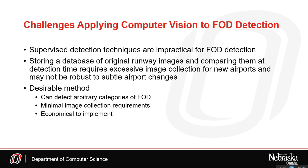There are some challenges with using computer vision for FOD detection that are addressed in this work. First, supervised detection methods are impractical for FOD detection because they can only detect predefined classes due to their dependence on a dataset with predefined classes and samples, while FOD is a broad data type. Another idea visited in previous works is to store a database of original runway and taxiway images and use direct image processing techniques to see if the images have changed. This requires excessive image collection that is specific to airports and may not be robust to subtle changes in airport environments. A method that can detect previously unseen categories of objects and is robust to subtle changes in airport environments is more desirable and practical for FOD detection. Based on a review of related FOD detection works and on the practical needs of airport operators, a FOD detection method that can detect arbitrary categories of FOD, requires minimal image collection requirements, and is economical to implement is desirable.